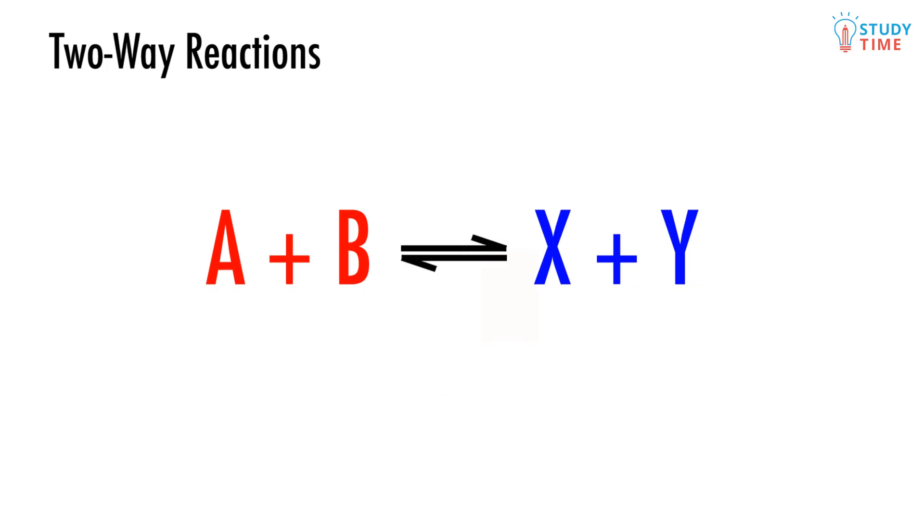That double arrow is extremely important. It means there's not just one, but actually two reactions going on at once. We're looking at a forward reaction, and we've got a reverse reaction, and they're both happening at the same time.